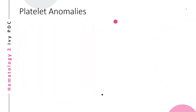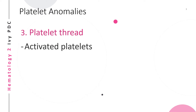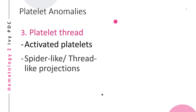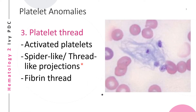The third platelet anomaly is the platelet thread. This occurs when platelets have been activated before the preparation of a blood smear. They are characterized by spider-like or thread-like projections — these are fibrin threads that the platelets have formed for coagulation or clotting.